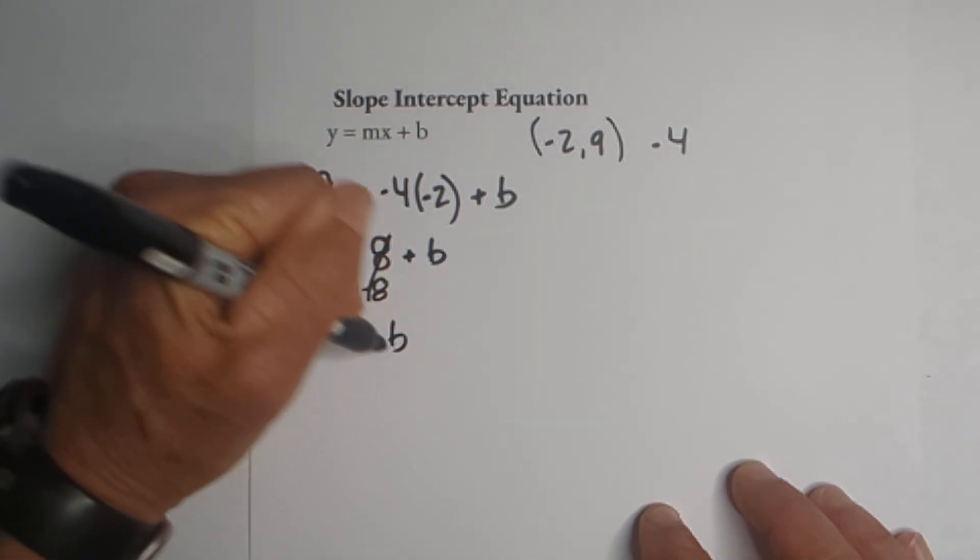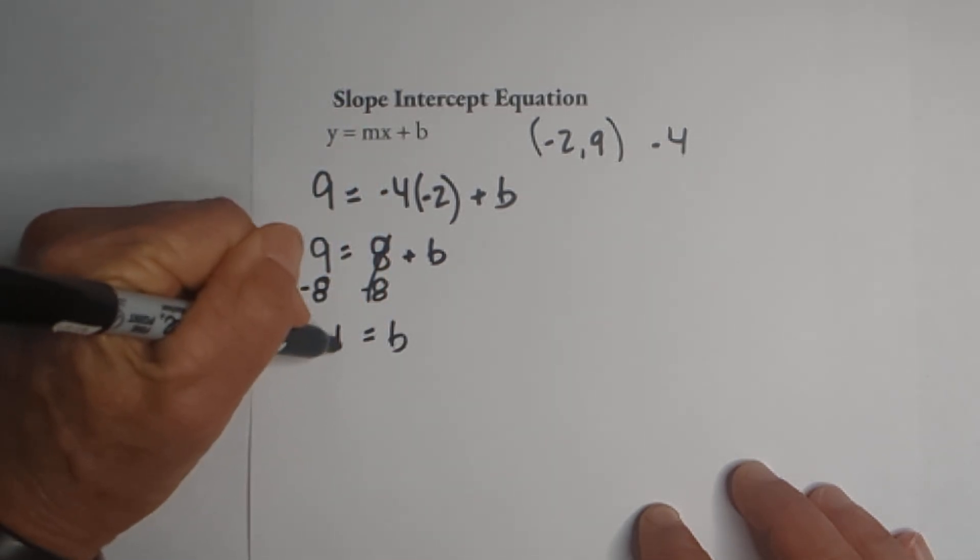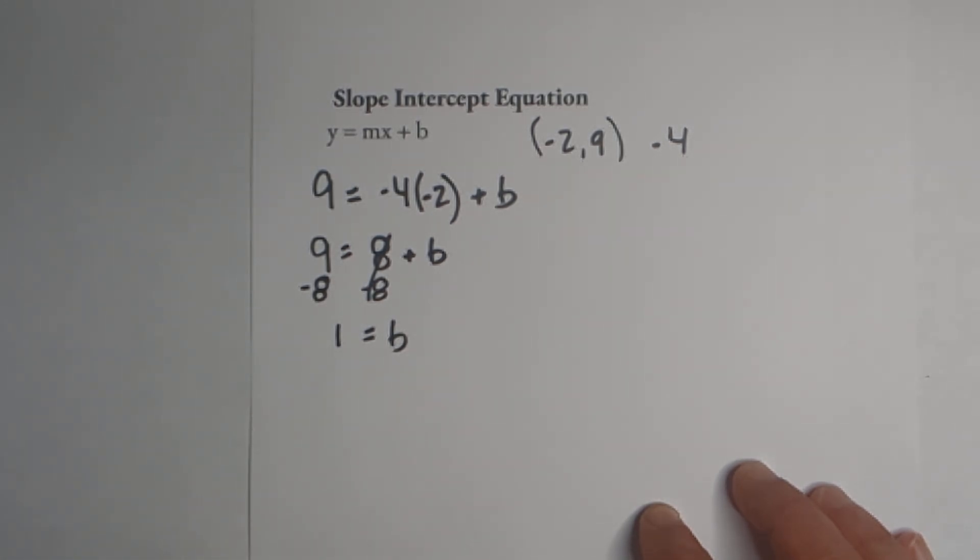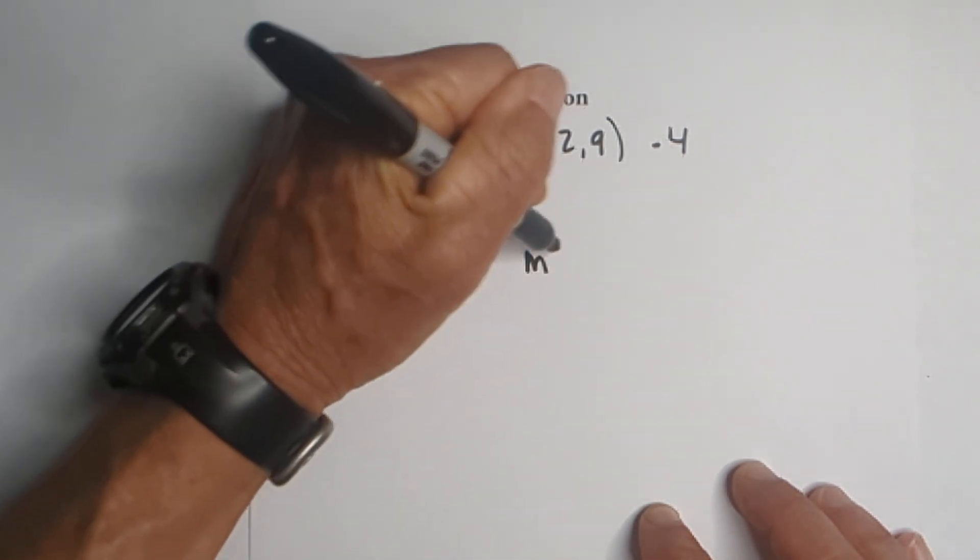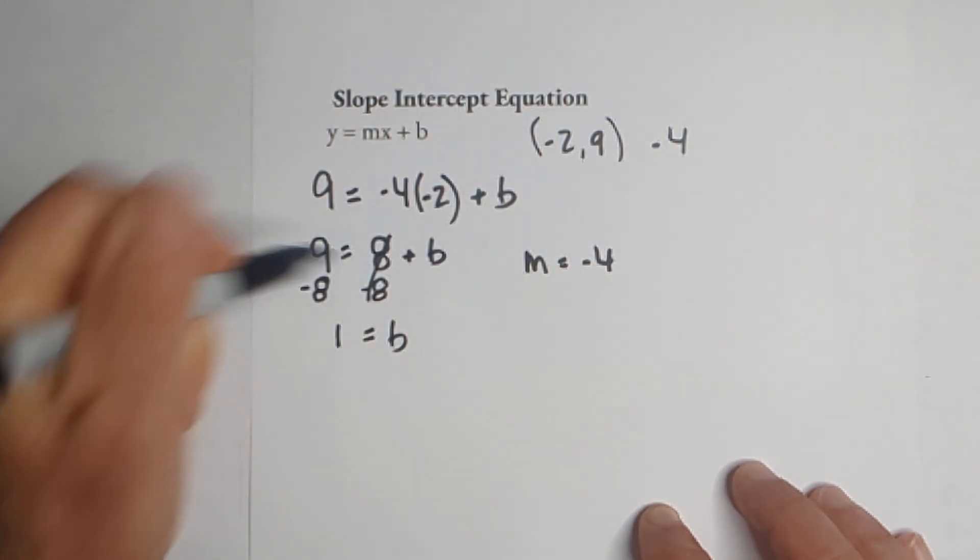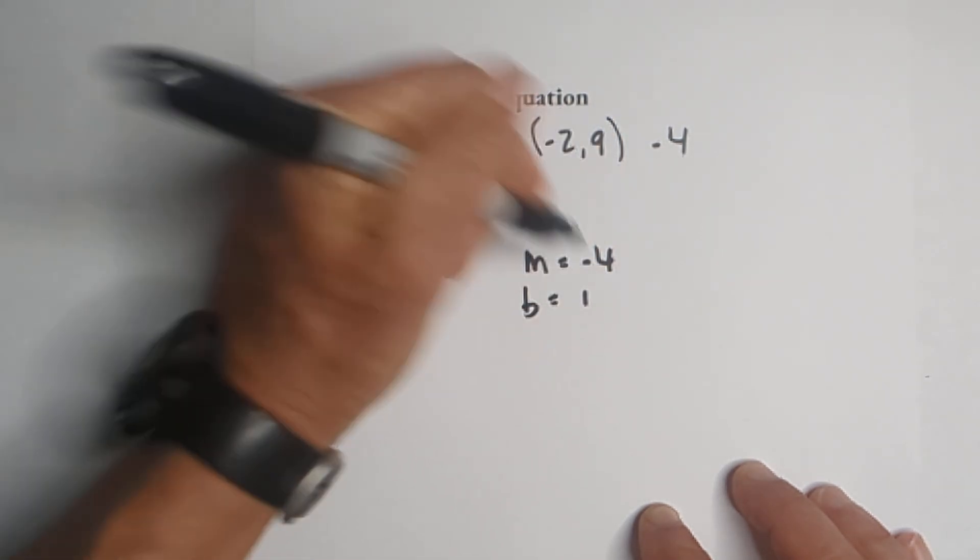These cancel, and so it becomes b equals one. So now we have an m of negative four and we have a b of one.